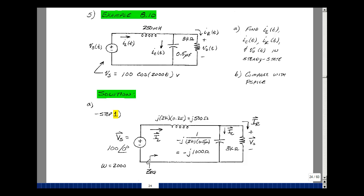Given this example of an inductor and a parallel resistor and capacitor, can you find the current I sub L of t, I sub C of t, I sub R of t, and V out in steady state? In the next video, we'll do a comparison with PSPICE.